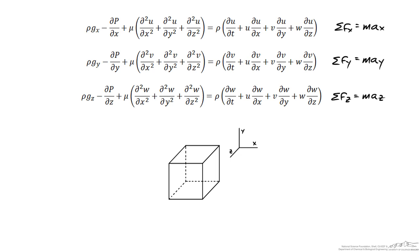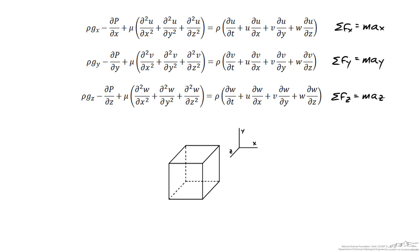Keep in mind that each of these terms is on a per unit volume basis. So typically, the force due to gravity might be the weight of something. If I took the weight and divided by the volume, what I am left with is the density (m over v) times gravity. On the right hand side, mass times acceleration divided by volume gives the density times the acceleration — so we are looking at the sum of forces equal to ma on a per unit volume basis.